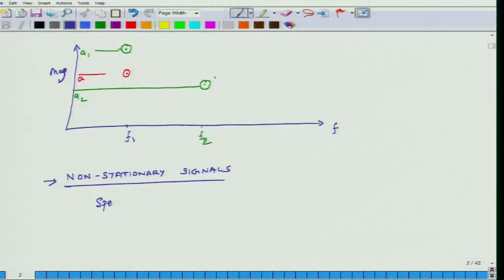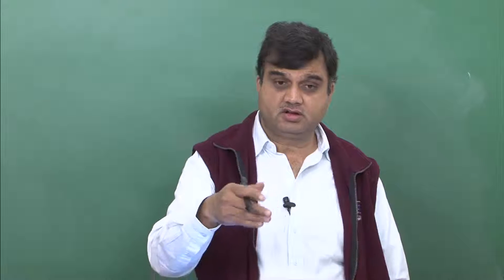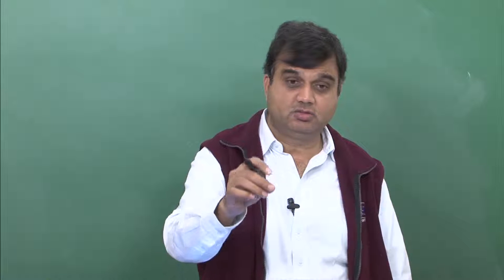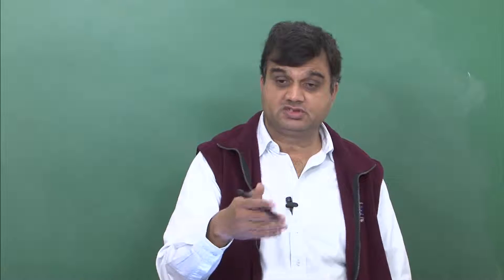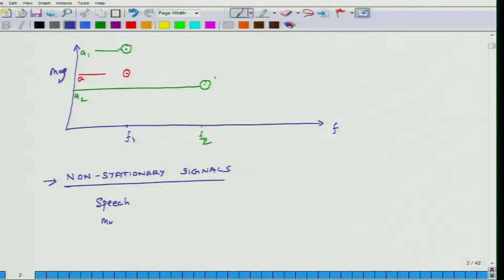Speech is a non-stationary signal. When I am talking, every word or every letter comes in a different sequence — I, T, C, O, M, E, S — the predictability of the sequence is difficult, so it comes in a different sequence. Music — most music, unless it is all repetitive, can be depicted as a non-stationary signal.